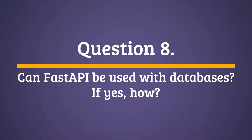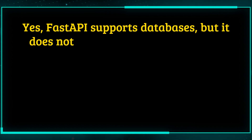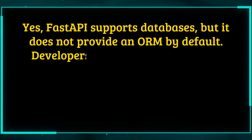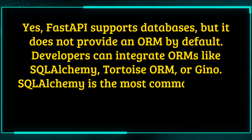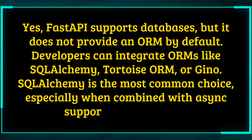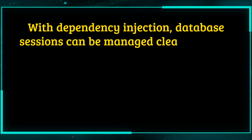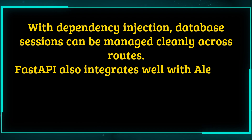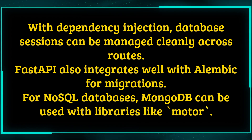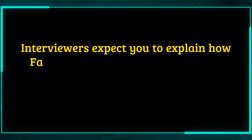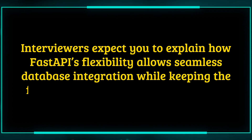Question 8: Can FastAPI be used with databases? Yes, FastAPI supports databases, but it does not provide an ORM by default. Developers can integrate ORMs like SQLAlchemy, Tortoise ORM, or Gino. SQLAlchemy is the most common choice, especially when combined with async support. With dependency injection, database sessions can be managed cleanly across routes. FastAPI also integrates well with Alembic for migrations. For NoSQL databases, MongoDB can be used with libraries like Motor. FastAPI's flexibility allows seamless database integration while keeping the framework lightweight and modular.